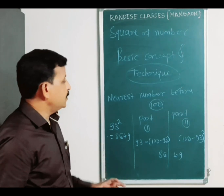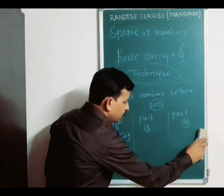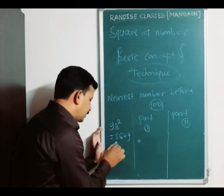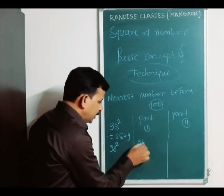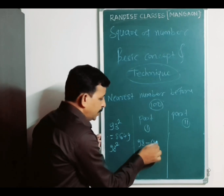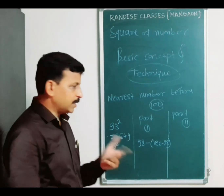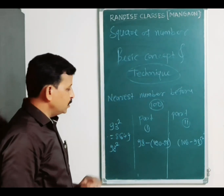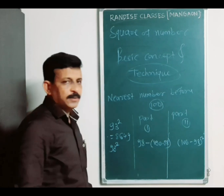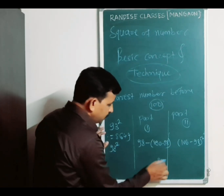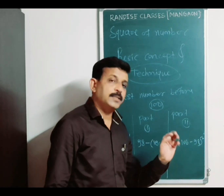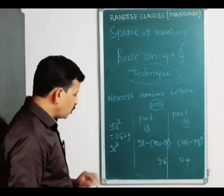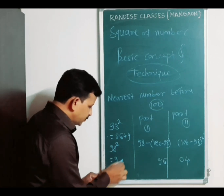We can find it very easily. Just take another example for the same technique. See here: 98 square. Part 1: 98 minus (100 minus 98). Part 2: (100 minus 98) squared. Now 100 minus 98 is 2, and 98 minus 2 is 96. Then 2 square equals 4, written as 04. Therefore the square of 98 is 9604.